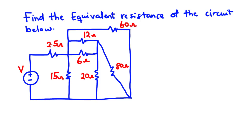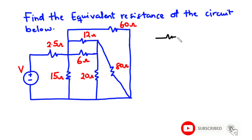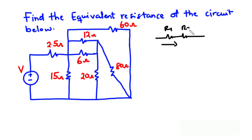In the previous videos we discussed how to identify whether any two resistors are either connected in series or in parallel. In this video we are going to do a recap of those principles and then apply them. When two resistors are connected sequentially and we have the same current flowing through them, then the two resistors are connected in series, so their equivalent resistance is R1 plus R2.